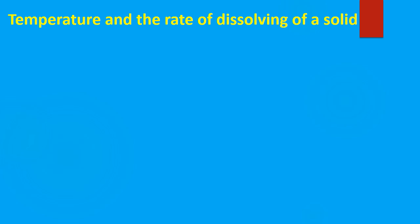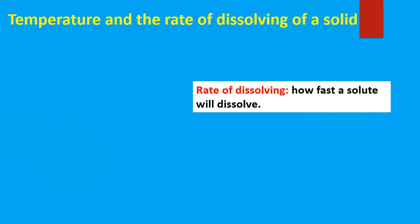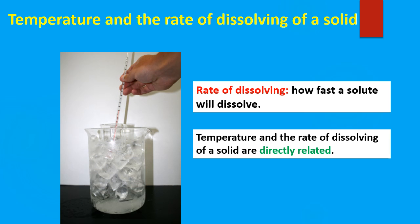Now let's look at the rate of dissolving. The rate of dissolving is how fast the solute will dissolve — this has nothing to do with solubility itself; it just determines how fast it will dissolve. Temperature and the rate of dissolving are directly related. As we increase temperature, how fast the solute dissolves is going to increase. The higher the temperature, the faster the solute will dissolve. Lower the temperature, the slower the solute will dissolve — so they're directly related.